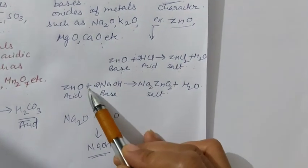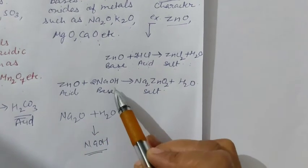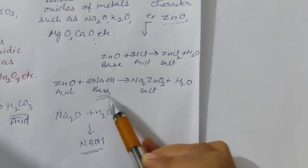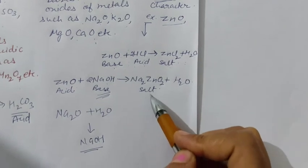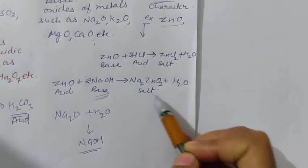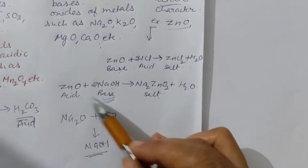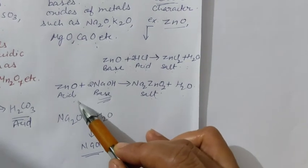While in another example where zinc oxide reacts with NaOH, here NaOH is a strong base and it forms another salt and water. So here zinc oxide works as an acid.